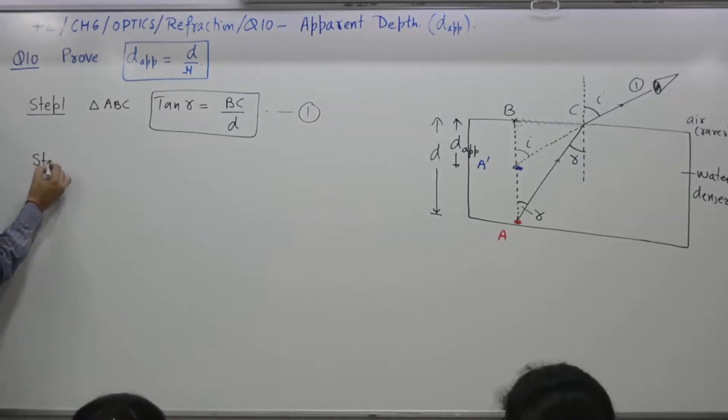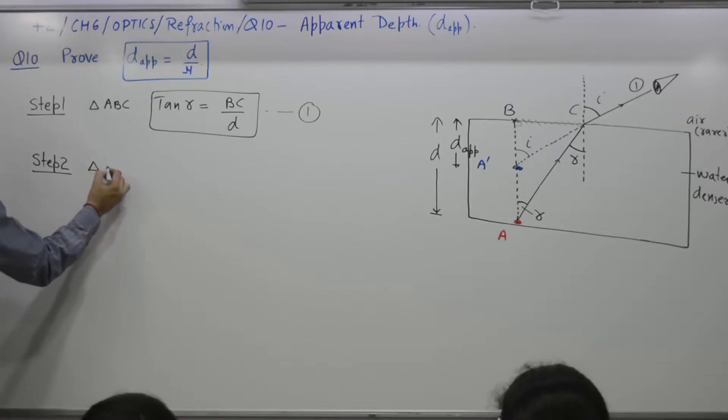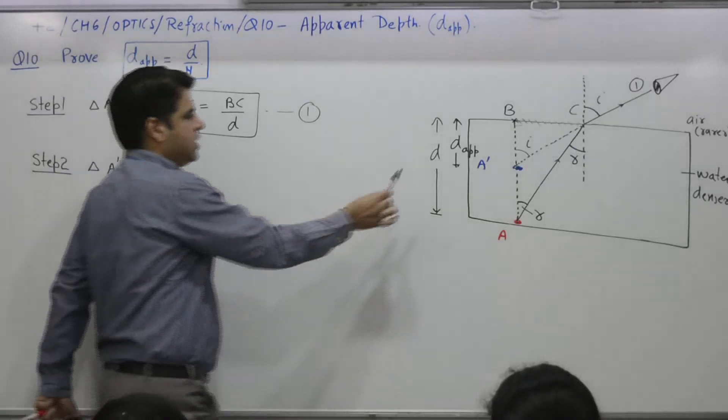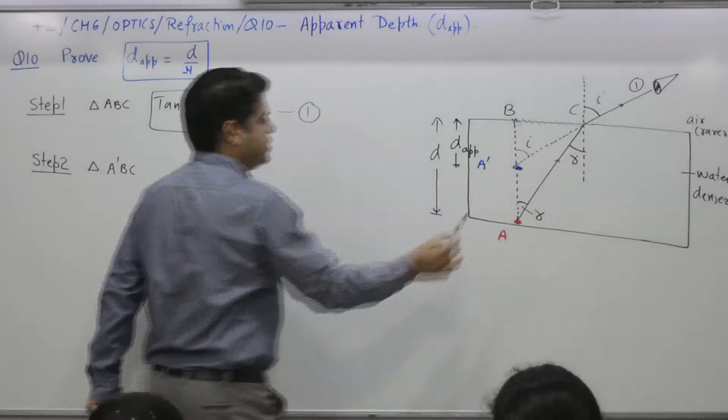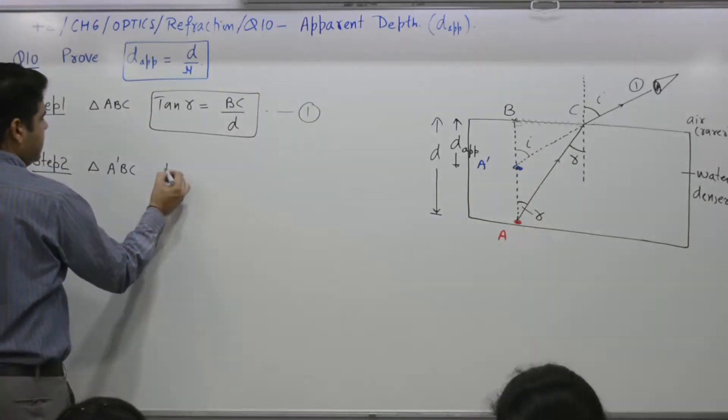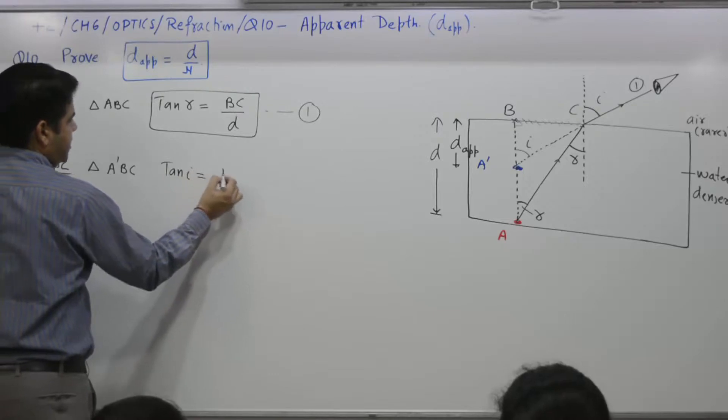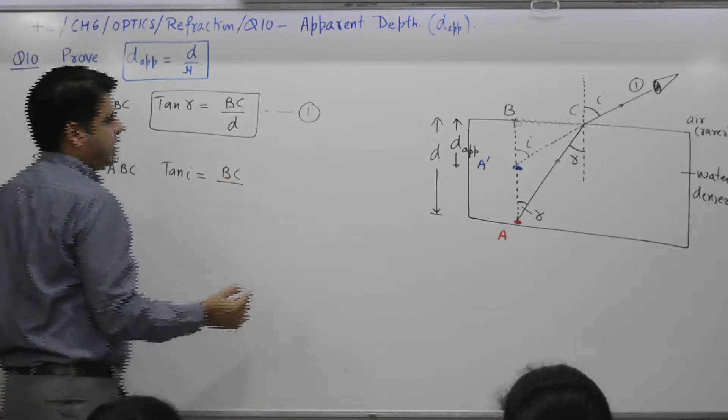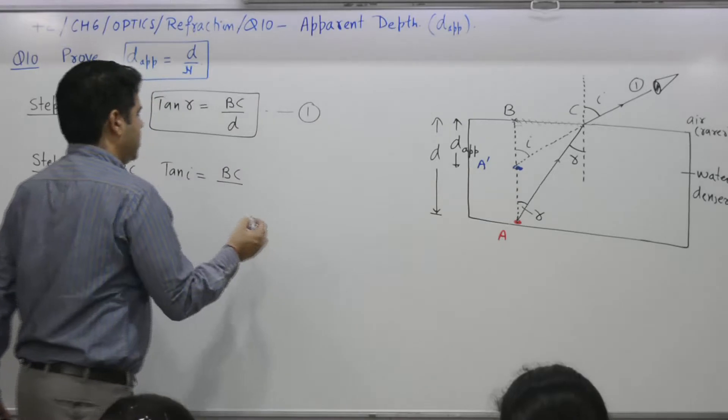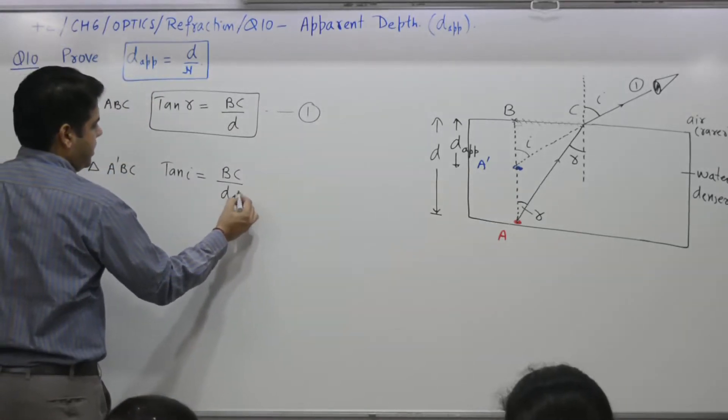Step 2. Triangle A dash BC. For this triangle A dash BC, tangent I is what? Tangent is equal to BC by A dash B. A dash B is what? D apparent.